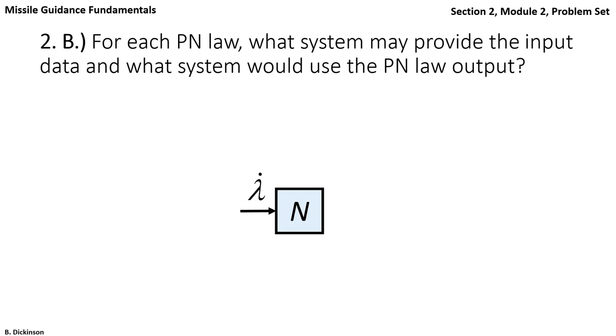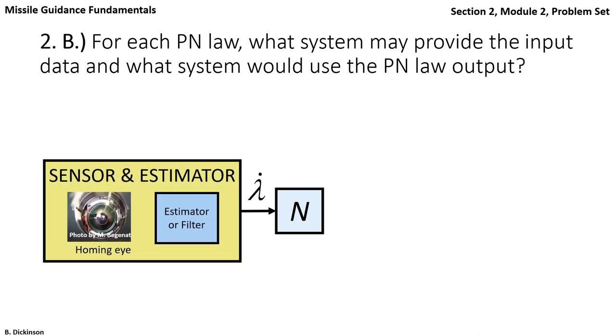So what could measure line of sight rate? It's not like the target will tell us its state. So we're going to have to sense it somehow remotely.